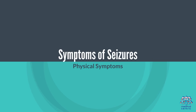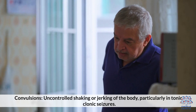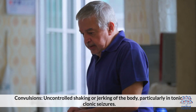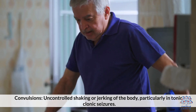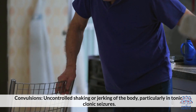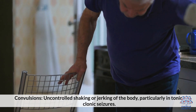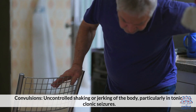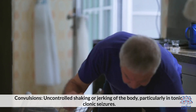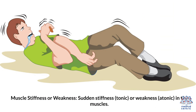4. Symptoms of Seizures. Physical symptoms: Convulsions involve uncontrolled shaking or jerking of the body, particularly in tonic-clonic seizures. Muscle stiffness (tonic) or weakness (atonic) can occur suddenly in the muscles.